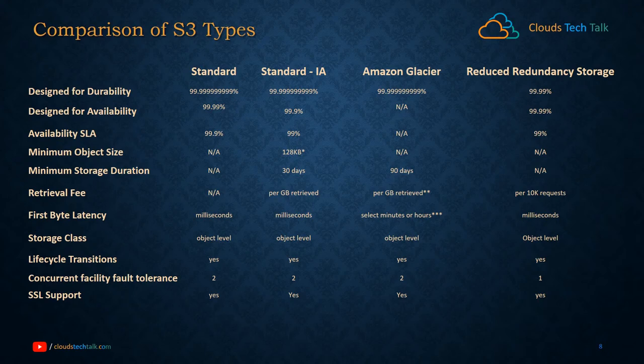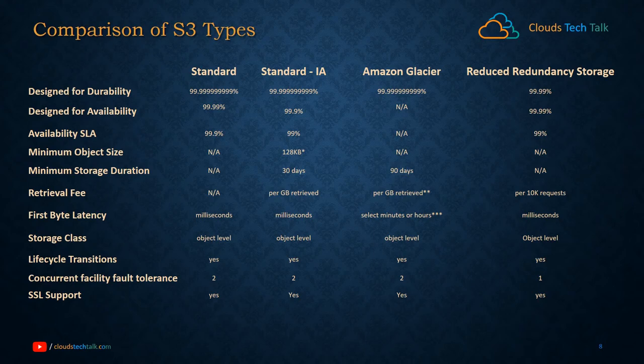One important thing to note: for Standard Infrequent Access storage, the minimum object size is 128 kilobytes. Even if you put a file smaller than 128 KB in Standard IA, AWS will always consider it as 128 KB for cost calculation. Regarding minimum storage duration, Standard IA requires a minimum of 30 days, and Amazon Glacier requires a minimum of 90 days — so if you put any files in Glacier, they must remain for 90 days, and Amazon calculates the cost accordingly.